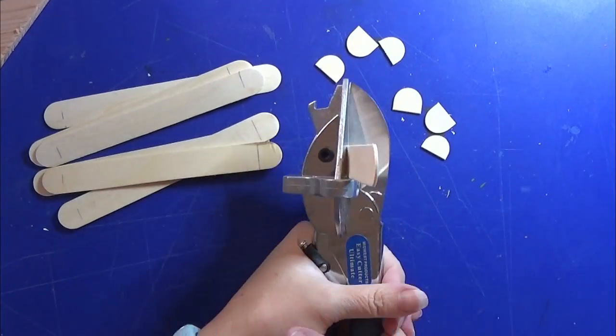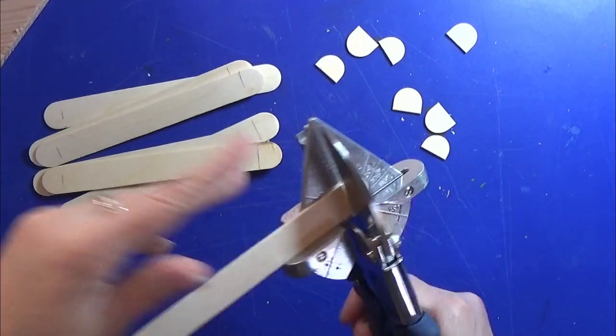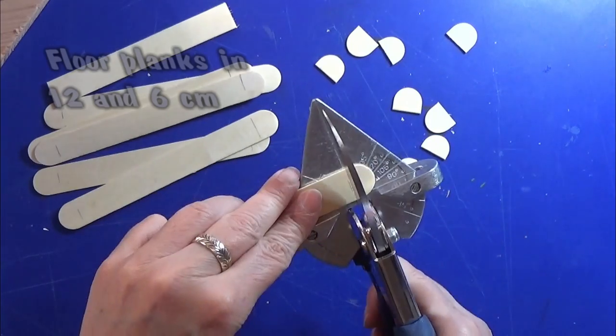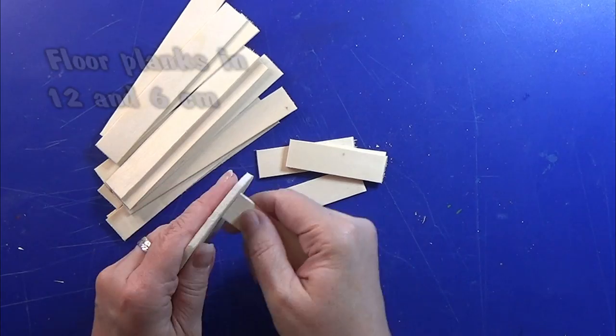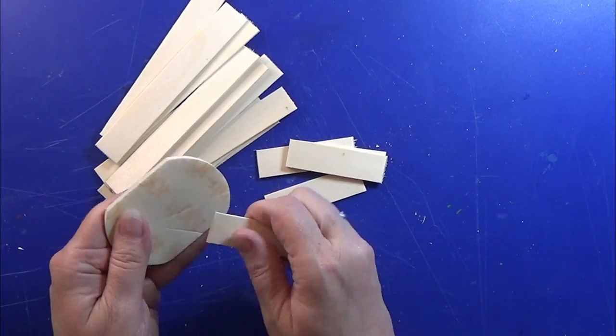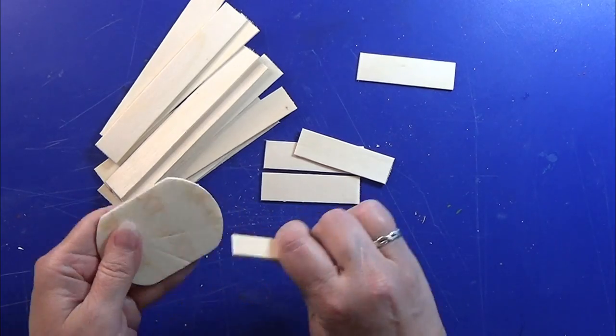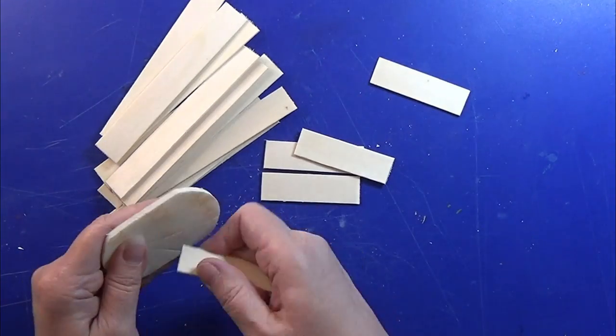Now to the floor. I have these icicle sticks and measured out 12 centimeters and cut these into lengths of 12 centimeters and half pieces in 6 centimeters and sanded them in both ends.